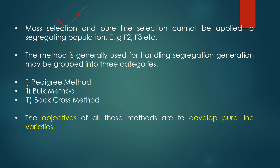When you do mass selection and pure line selection, you'll have a large number of groups of plants with the same genetic variety, and there will be a lot of uniformity prevailing in all the plants. It becomes very difficult to find out which group of offspring plants came from which father or mother plants. To clear this confusion and segregate generations categorically according to their parent, we have different methods: the pedigree method, the bulk method, and the backcross method. The main objective of all these methods is to develop pure line varieties.